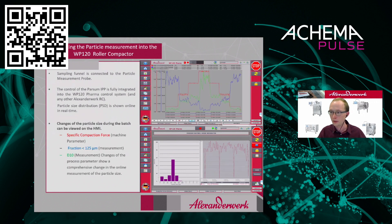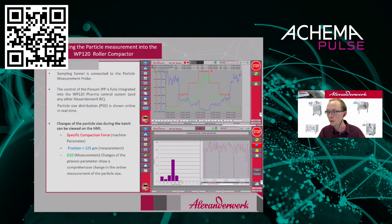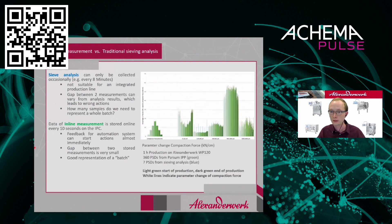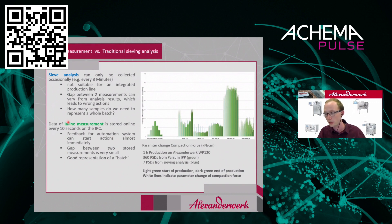Changing the compaction force in red leads to changed process parameters and changed particle sizes. We see the D10 in green and the fraction smaller than 125 microns in blue. We see a good correlation between changing parameters and the measurement. The inline measurement is taken every 10 seconds, for example, while the sieve analysis can only be taken every once in a while. This gives an advantage because you can generate more data and get a better representation of the produced batch. We can also see changes in the process parameters clearly. The next graphic will be larger on the following slide.